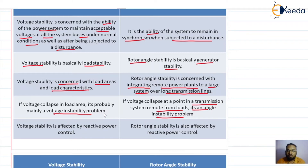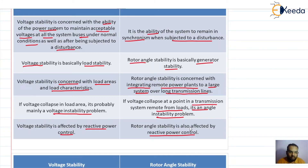The key difference between voltage instability and rotor angle instability: voltage stability is affected by reactive power control. Rotor angle stability is also affected by reactive power control, but it can also be discussed in terms of real power control. More specifically, voltage stability is mainly affected by reactive power control only, whereas rotor angle stability can be controlled with the help of both real power and reactive power control.